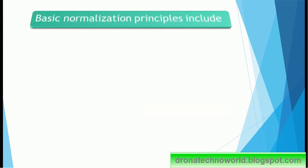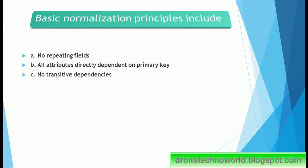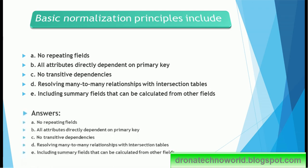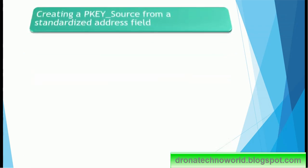Next question. Basic normalization principles include: no repeating fields, all attributes largely depend on primary key, no transitive dependencies, resolving many to many relationships with intersection table, including summary fields that can be calculated from other fields. And the correct answer is all of these: no repeating fields, all attributes directly dependent on primary key, no transitive dependencies, resolving many to many relationships, including summary fields that can be calculated from other fields.